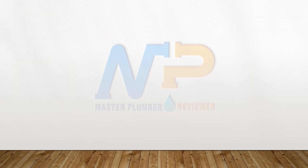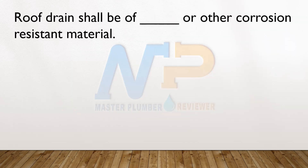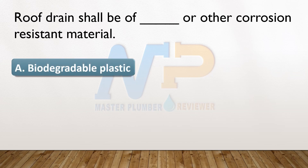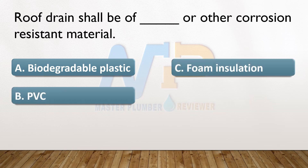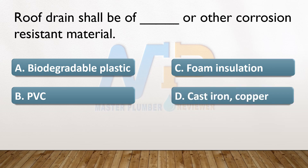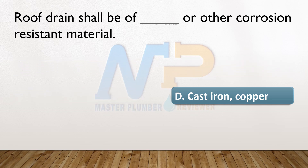Roof drain shall be of blank or other corrosion resistant material. A. Biodegradable plastic. B. PVC. C. Foam insulation. D. Cast iron / Copper. The answer: D. Cast iron / Copper.